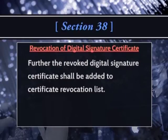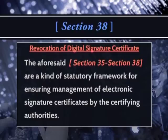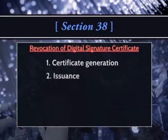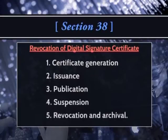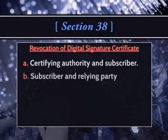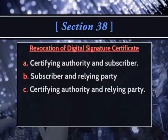Sections 35 and 38 form a statutory framework for ensuring management of electronic signature certificates by the certifying authorities. These sections highlight the important steps in the certificate management process: certificate generation, issuance, publication, suspension, revocation, and archival. All these steps are important to ensure the integrity of electronic digital signature certificates, thereby creating an atmosphere of mutual trust in the electronic medium between the certifying authority and the subscriber, the subscriber and the relying party, and the certifying authority and the relying party.